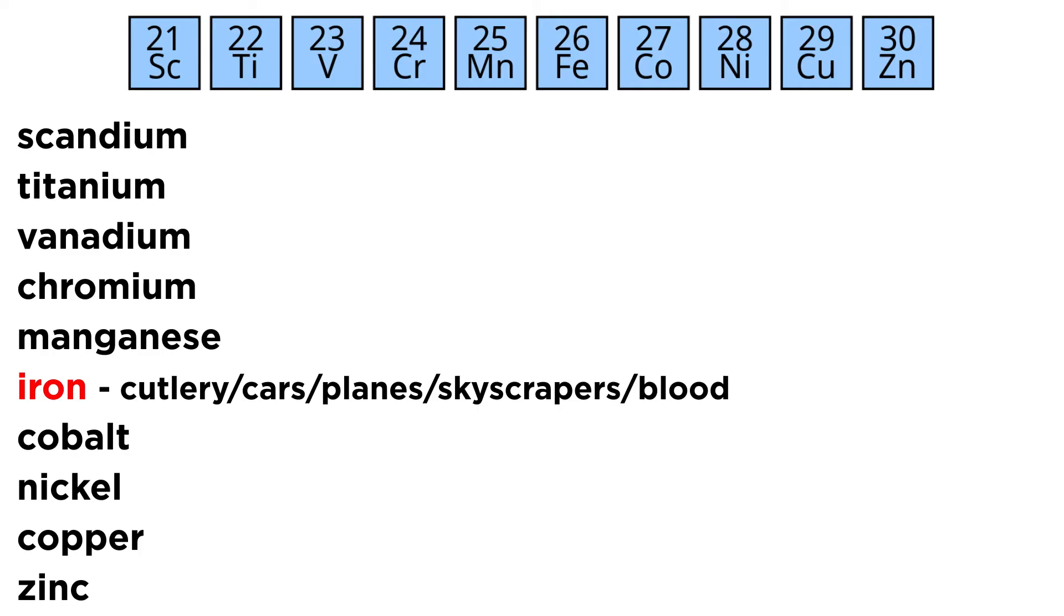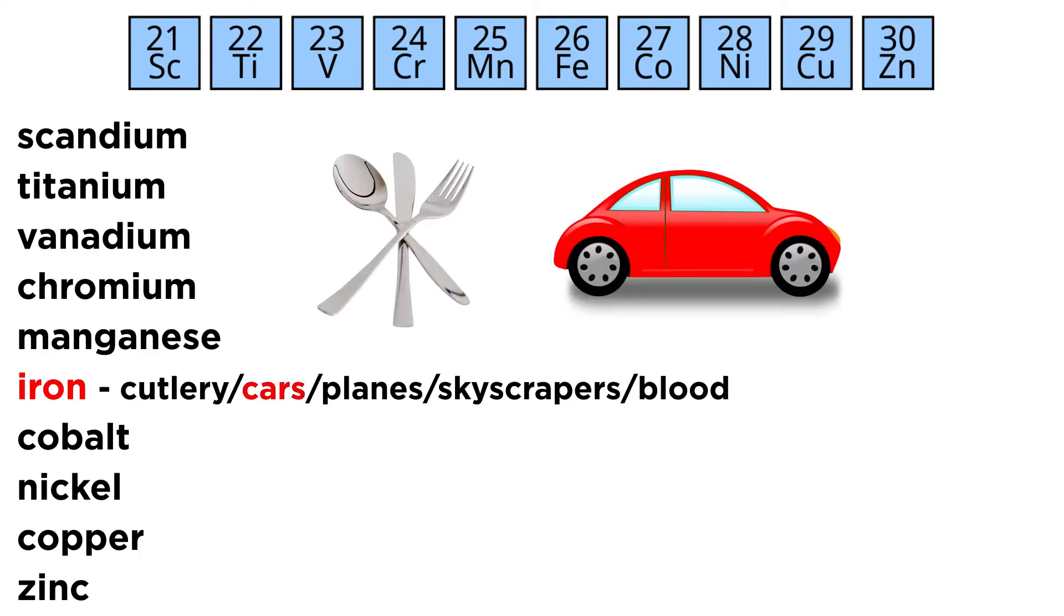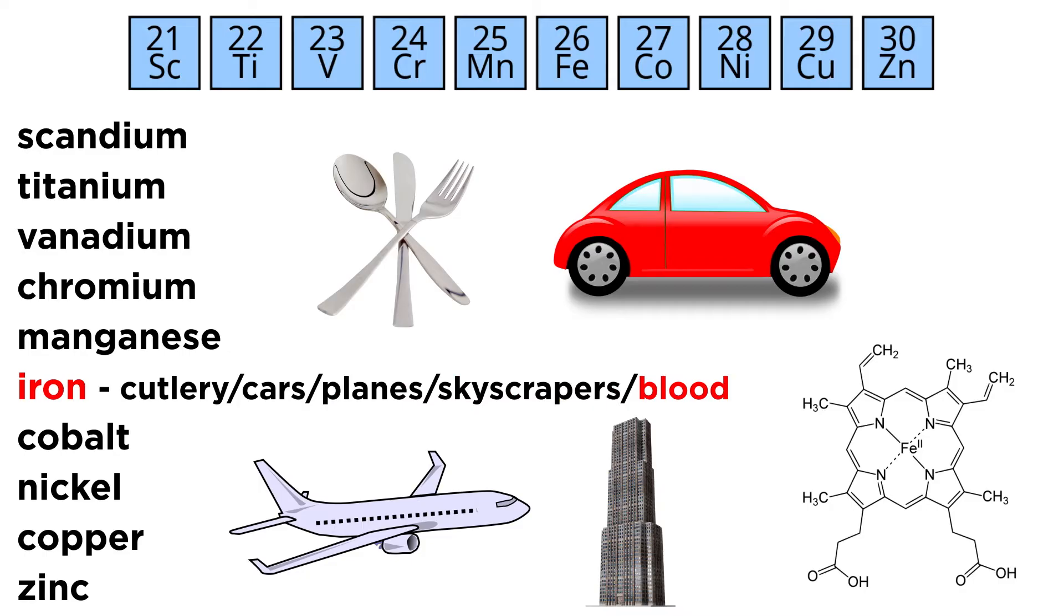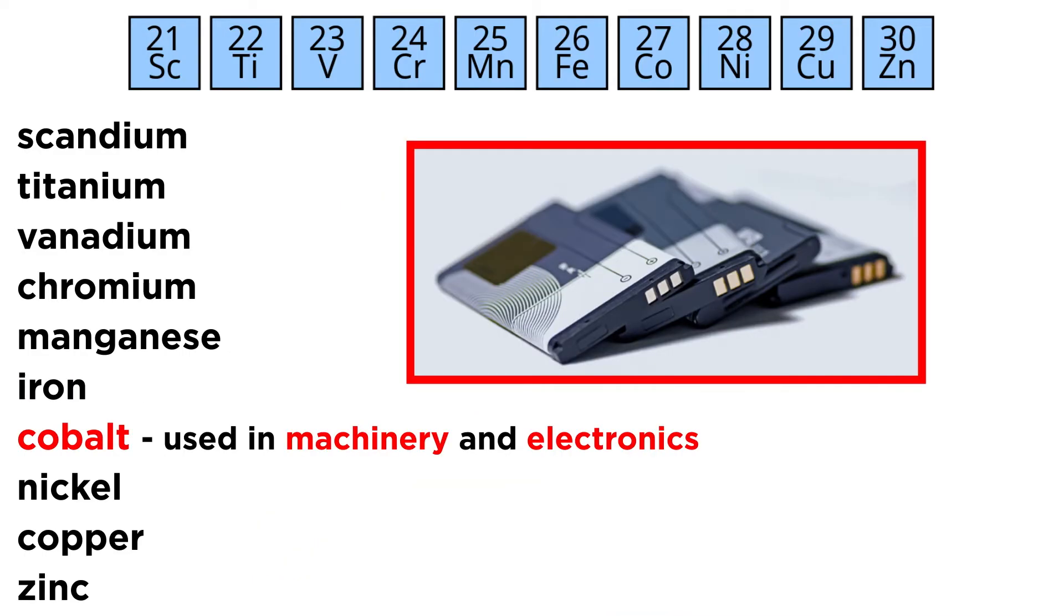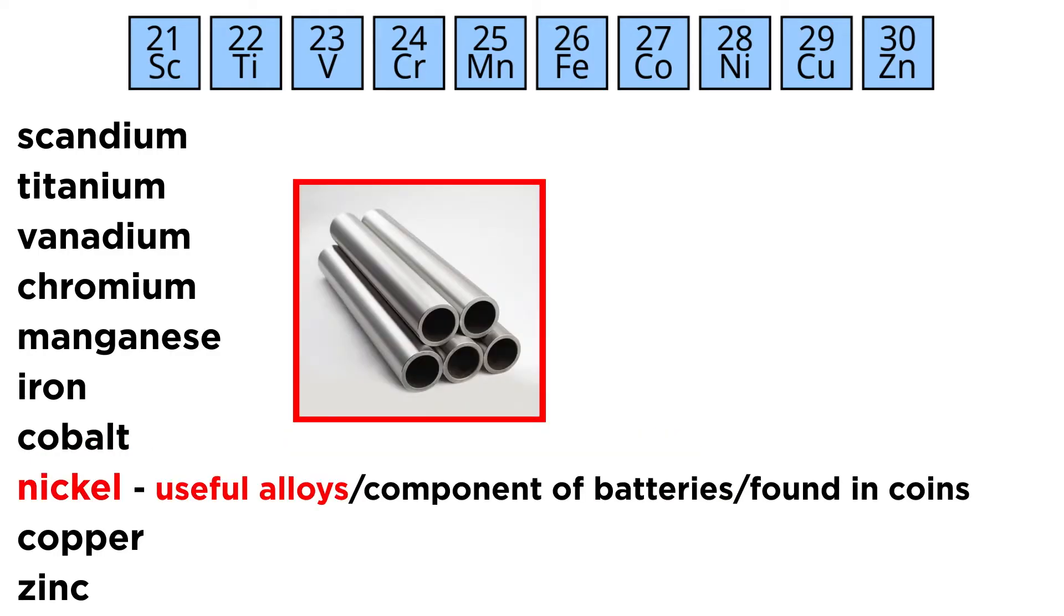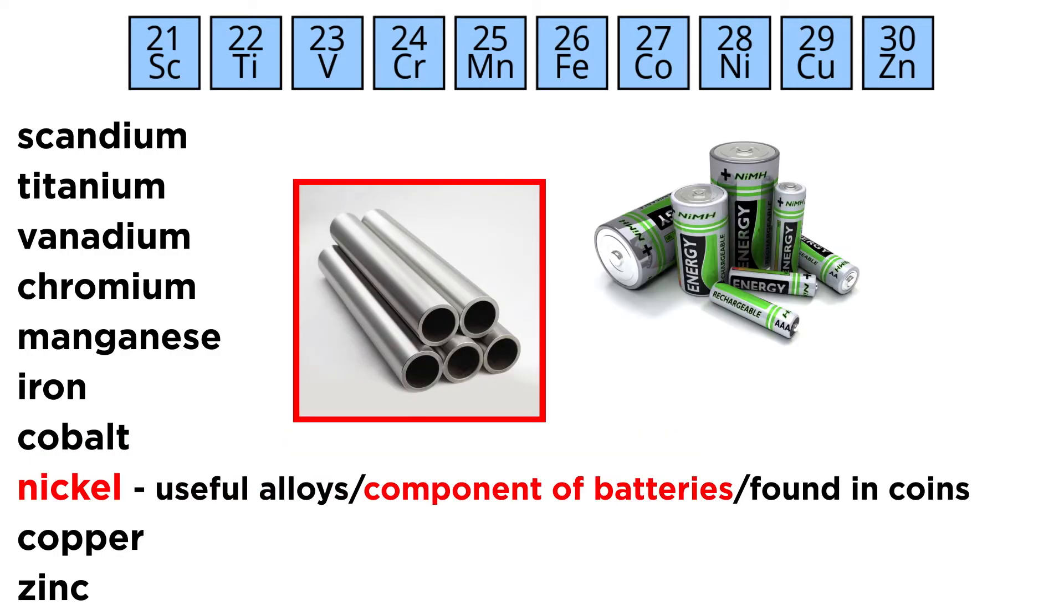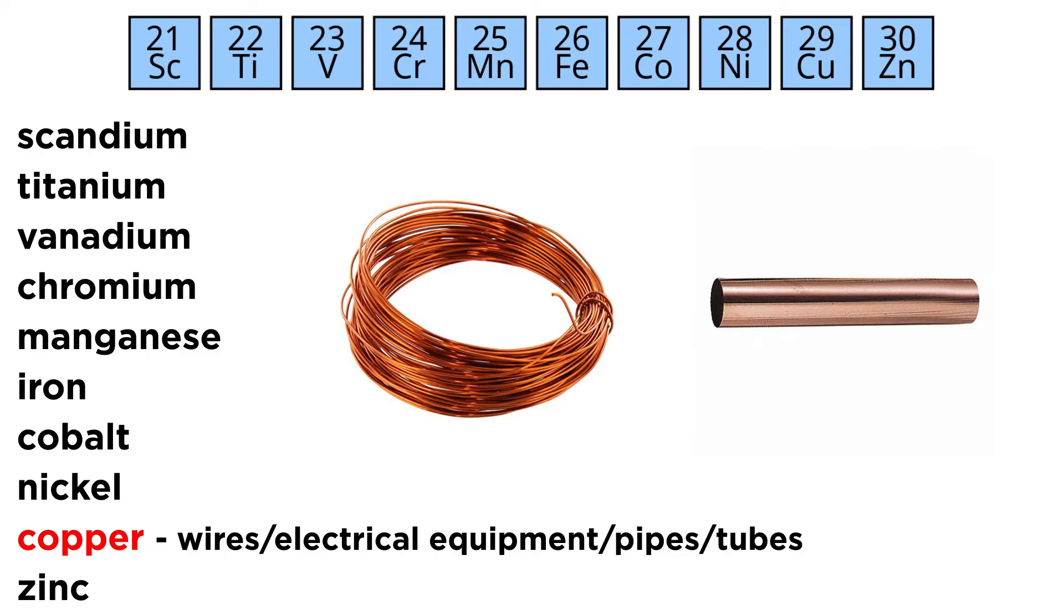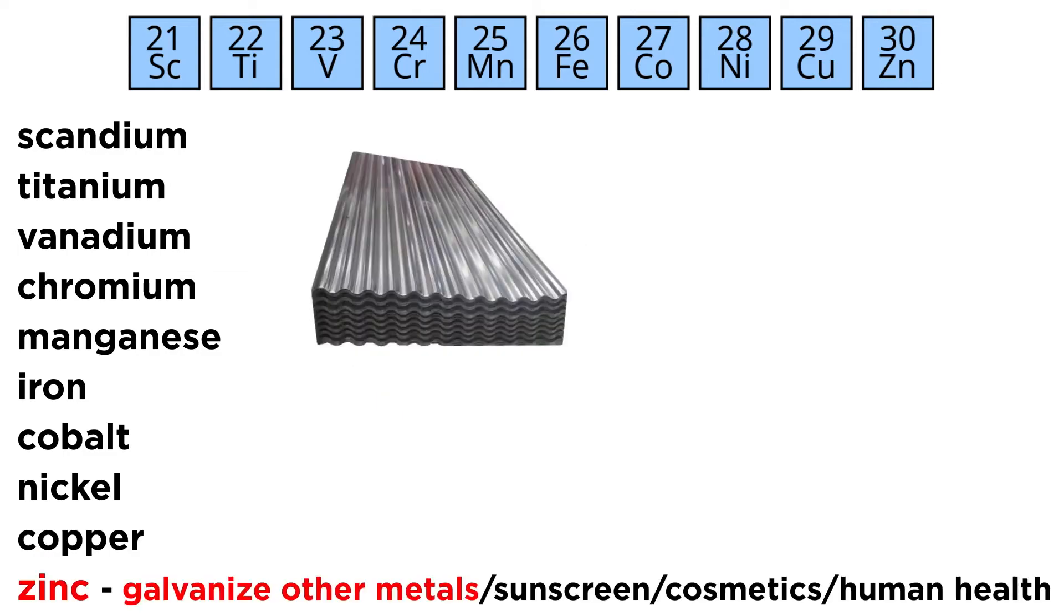Iron is absolutely everywhere, from the cutlery in your kitchen to cars, planes, and skyscrapers. It's even in the hemoglobin in your blood. Cobalt is used in machinery and electronics. Nickel is found in useful alloys and is an important component of many batteries. It is also used to make coins. Copper is tremendously useful for making wires and other electrical equipment, as well as pipes and tubes. And zinc is frequently used to galvanize other metals to prevent rusting. It is also used in sunscreens and cosmetics, and is essential to human health.